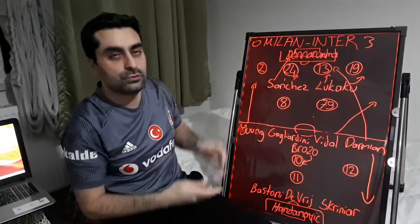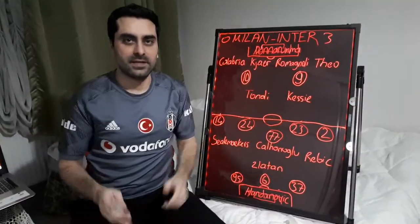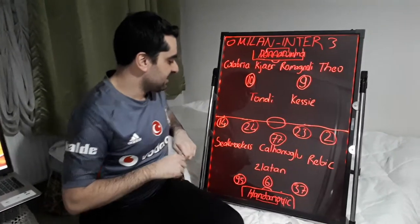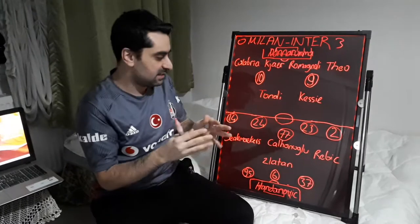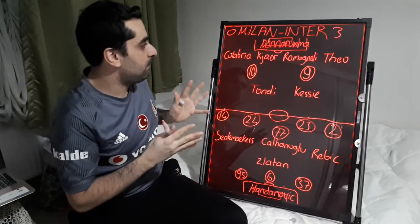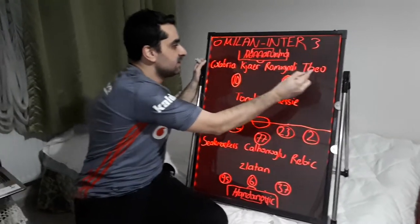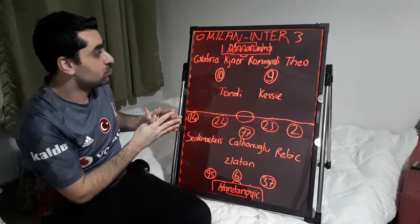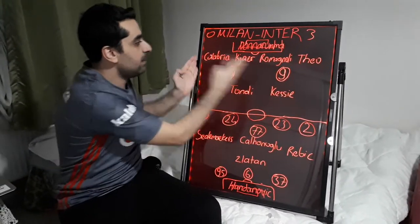Inter deserved and won this game 3-0. Milan played in a classical 4-2-3-1 formation — Pioli's classical formation. But Milan played very unattractive in this game. Calabria and Theo made so many mistakes, and Inter found so many empty spaces behind Calabria and Theo.